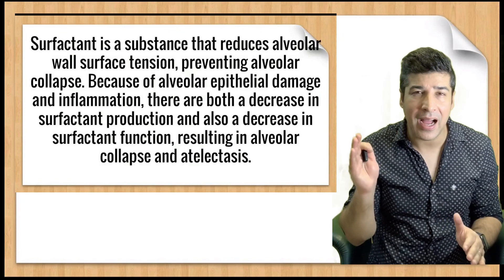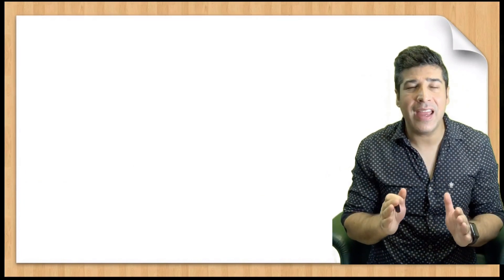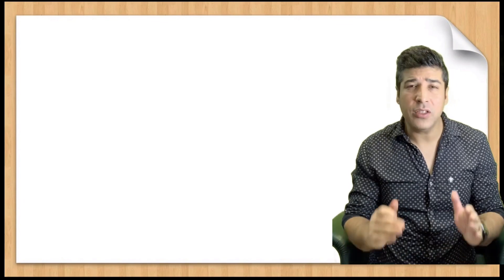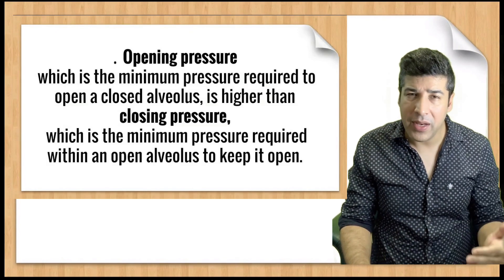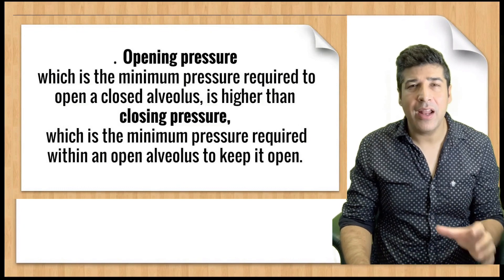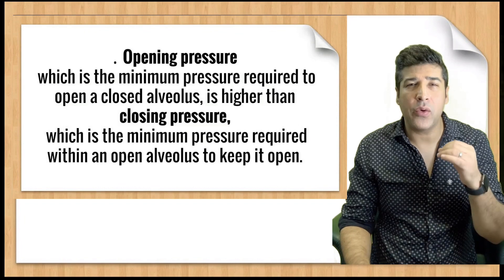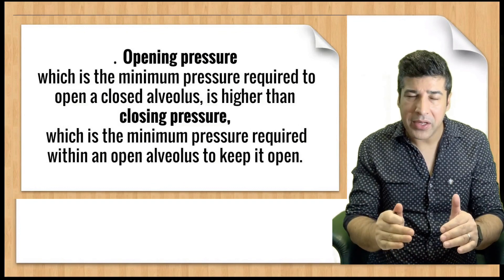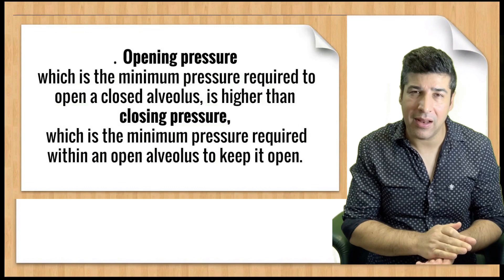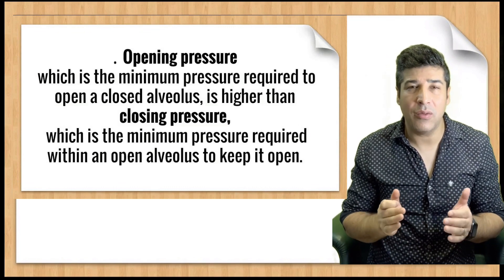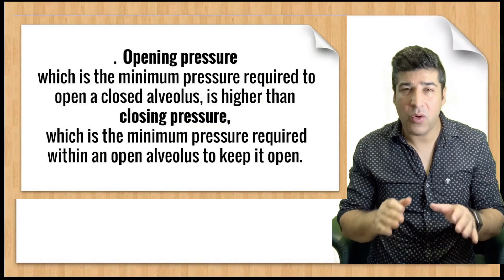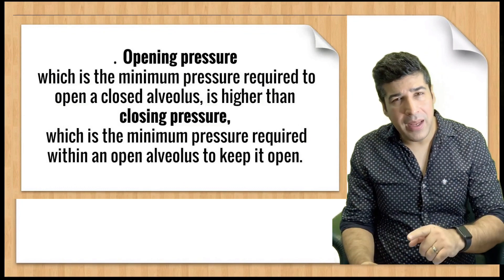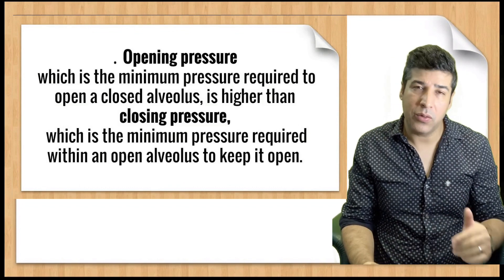With increased surface tension, the alveolus tends to collapse. There are two important concepts: opening pressure and closing pressure. Opening pressure is the minimum pressure required to open a collapsed alveolus. Closing pressure is the minimum pressure required to keep the alveolus open. Opening pressure is always higher than closing pressure.